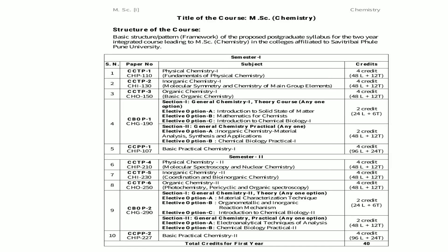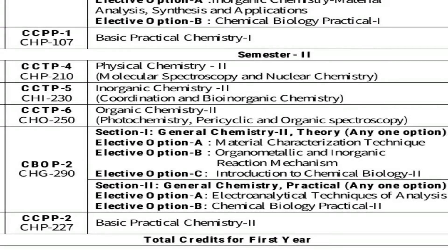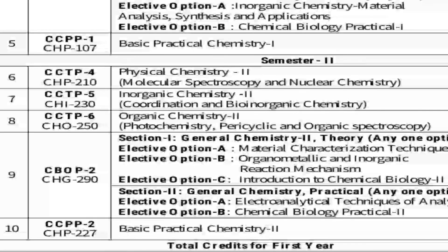In this second semester, there are four subjects. First is CHP 210, which includes physical chemistry — specifically molecular spectroscopy and nuclear chemistry. This is a four-credit course with 48 lectures plus 12 tutorials. The second course is CHI 230, inorganic chemistry second, which includes two sections: first, coordination chemistry, and second, bio inorganic chemistry.